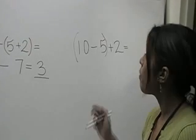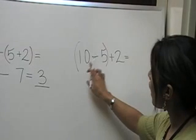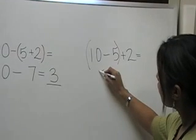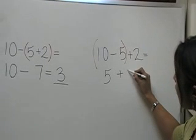According to the rule, we must solve whatever is inside the parentheses first. So we have 10 minus 5, which equals 5. Now, we simply bring everything down that we haven't solved yet.